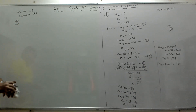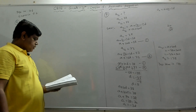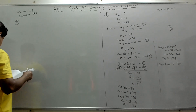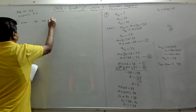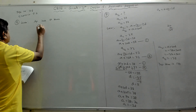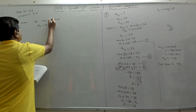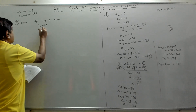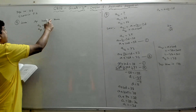Problem 8: an AP consists of 50 terms, of which the third term is 12 and the last term is 106. Find the 29th term. Given: AP has 50 terms, a3 = 12, and since it has 50 terms, the last term is a50 = 106.